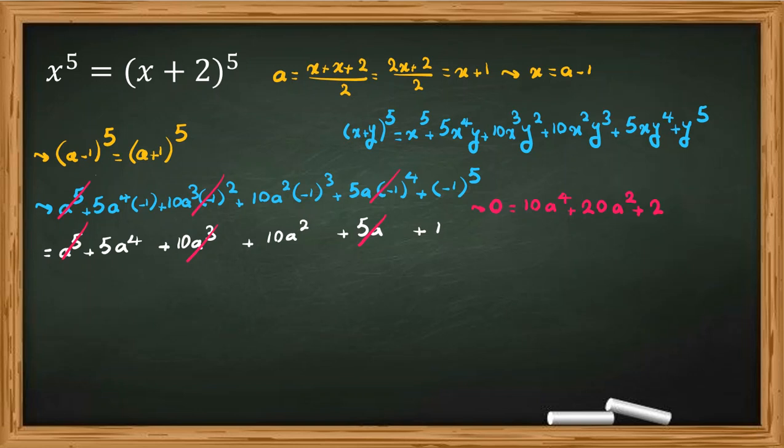Now in the next step, we divide both sides by 2. So 0 equal to 5 a to the 4 plus 10 a squared plus 1.